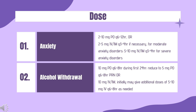Alcohol withdrawal: To aid in symptomatic relief of acute agitation, tremor, impending or acute delirium tremens, and hallucinations. 10 mg PO Q6–8HR during the first 24 hours, then reduced to 5 mg PO Q6–8HR PRN; or 10 mg IV/IM initially, then may give additional doses of 5 to 10 mg IV/IM Q6–8HR as needed.